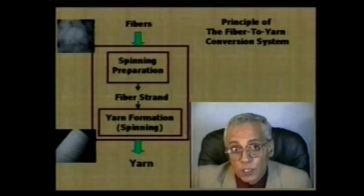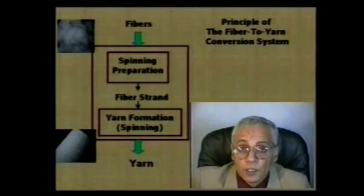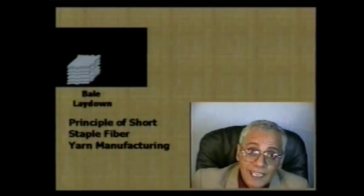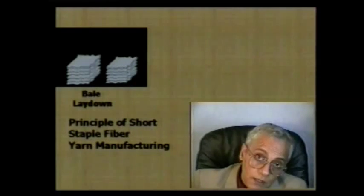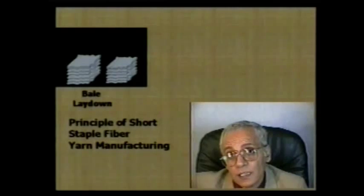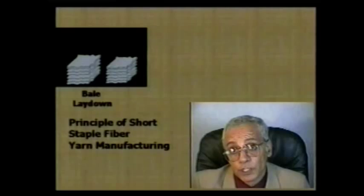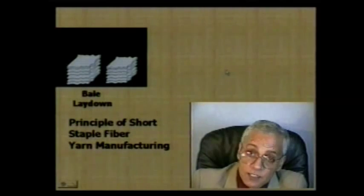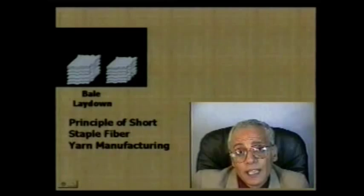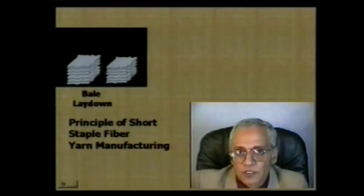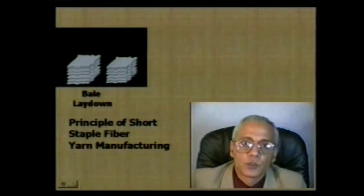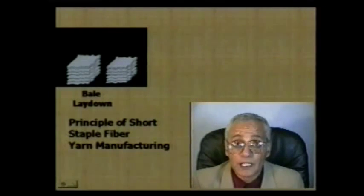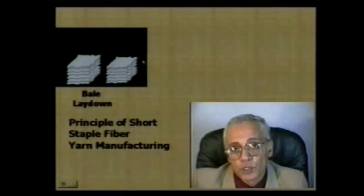Taking a closer look at the system, the starting point in any fiber to yarn conversion system is the bale of fibers. A typical bale mix or lay-down may consist of 20 all the way to 60 — sometimes 80 or 90 — bales. Each bale has fibers of different characteristics or attributes. The idea is to get a cotton mix consisting of mini bales and then mix the fibers from different bales together to produce a homogeneous fiber mix.